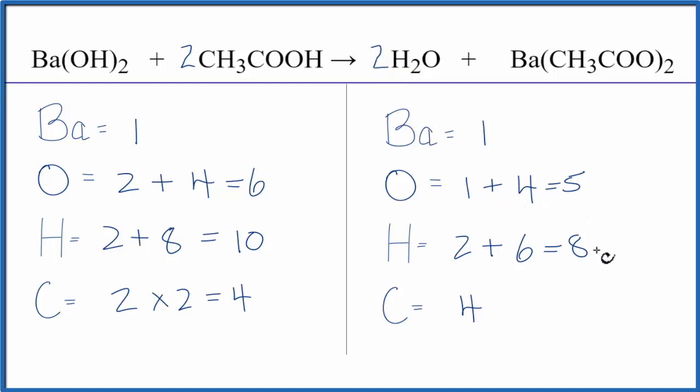Let's update our oxygen and hydrogen. For oxygen, I have one times two, two of those, plus one, two times two, that's four. That gives me six oxygen atoms, so those are balanced.